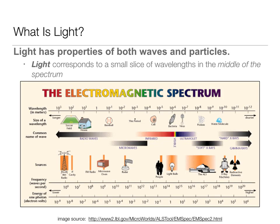We've got to go a little bit into physics when we talk about vision, because light is what vision is seeing. Light has properties of both waves and particles, and it is a tiny little sliver of the greater electromagnetic spectrum. That larger spectrum includes things like radio waves, microwaves, infrared, ultraviolet, X-rays, and gamma rays — and visible light is just this tiny little sliver of it.